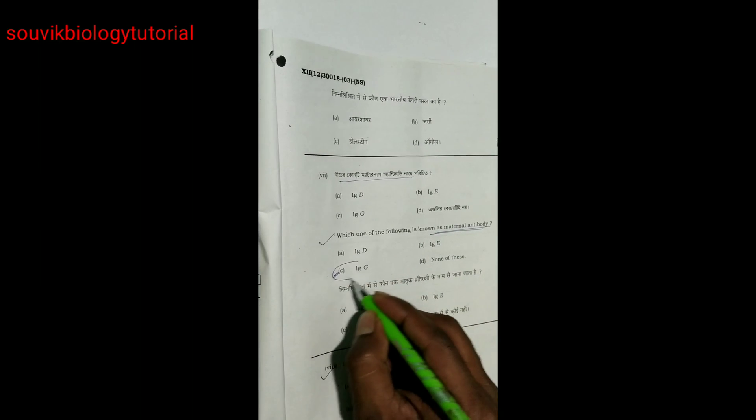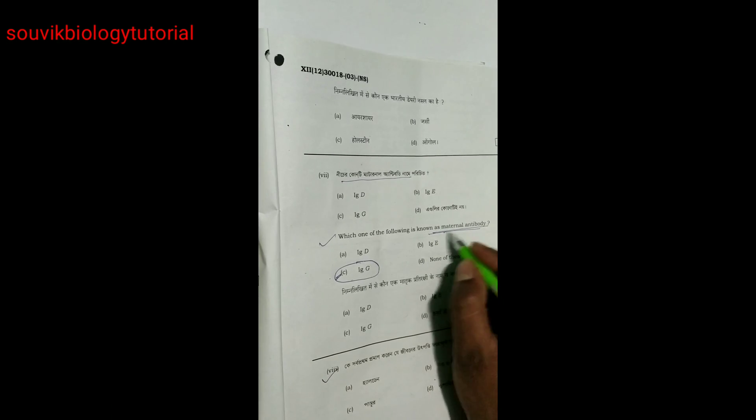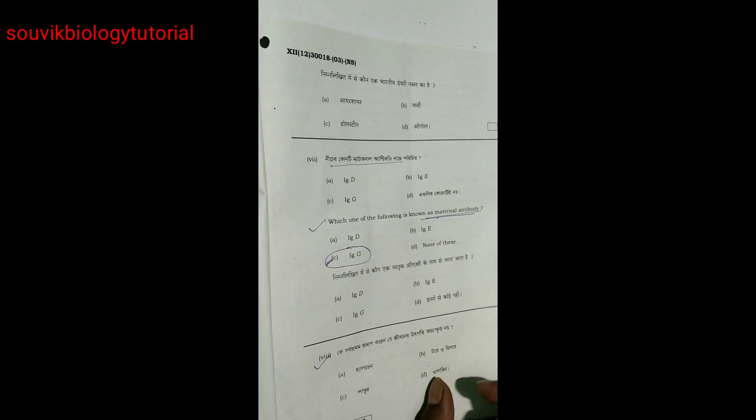Which is known as the maternal antibody? IgG. This kind of antibody only can pass the placenta. So maternal antibody is known as the IgG. Next question.